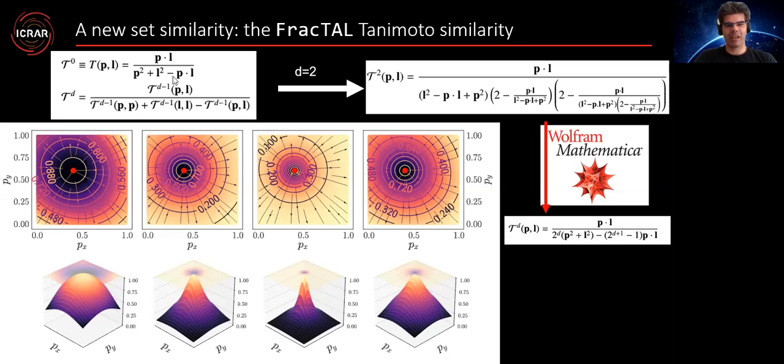And what this fractal Tanimoto similarity does is that it makes the similarity steeper. You see here is for depth zero, the standard Tanimoto, for depth five, for depth 10. This is an average for depth five, I think. And you see here the corresponding gradient flow. So this becomes steeper. And why is that important? It's important because it provides a finer grained similarity.